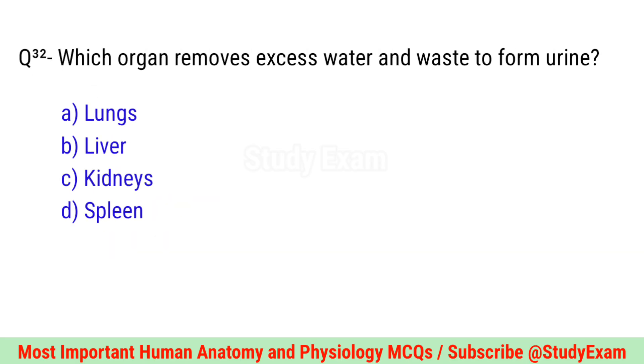Question number thirty-two. Which organ removes excess water and waste to form urine? Correct option is C. Kidneys.